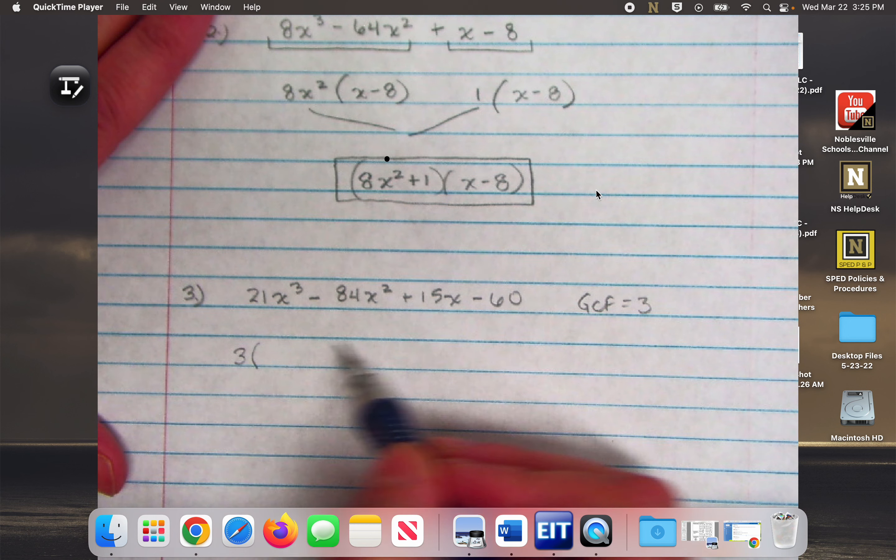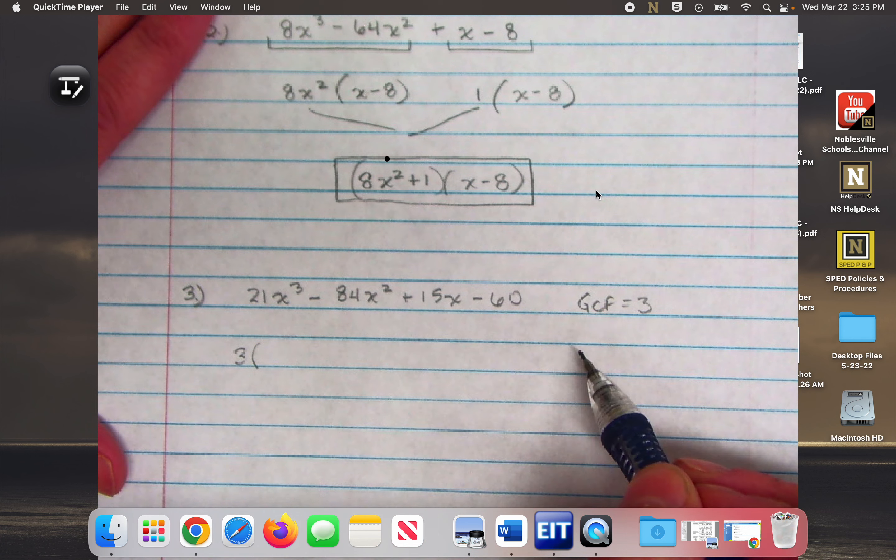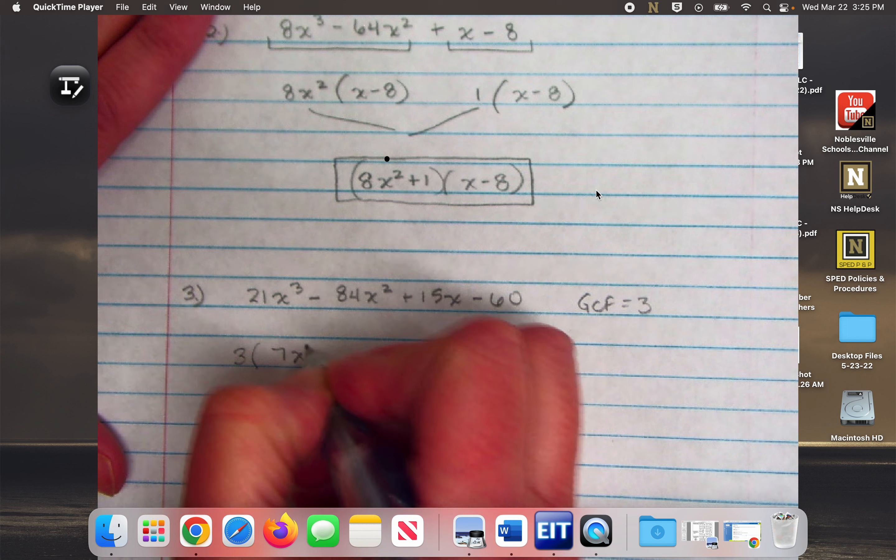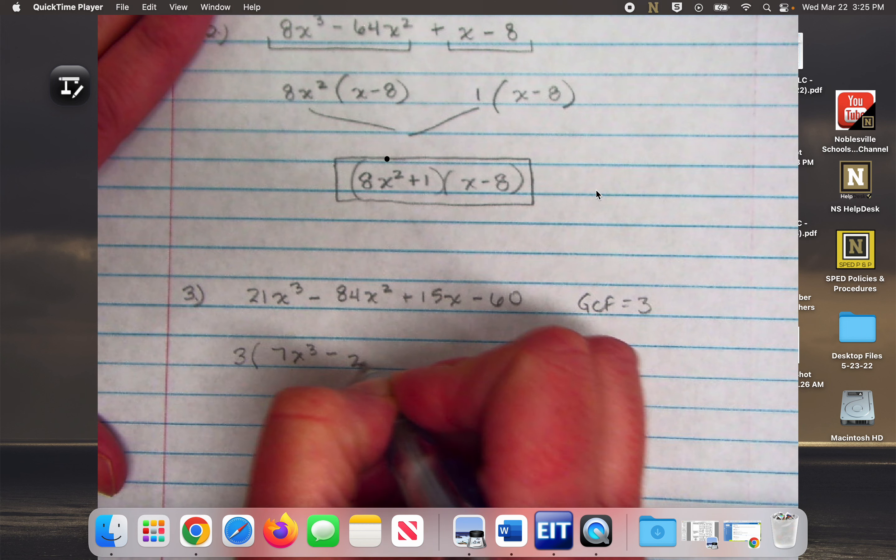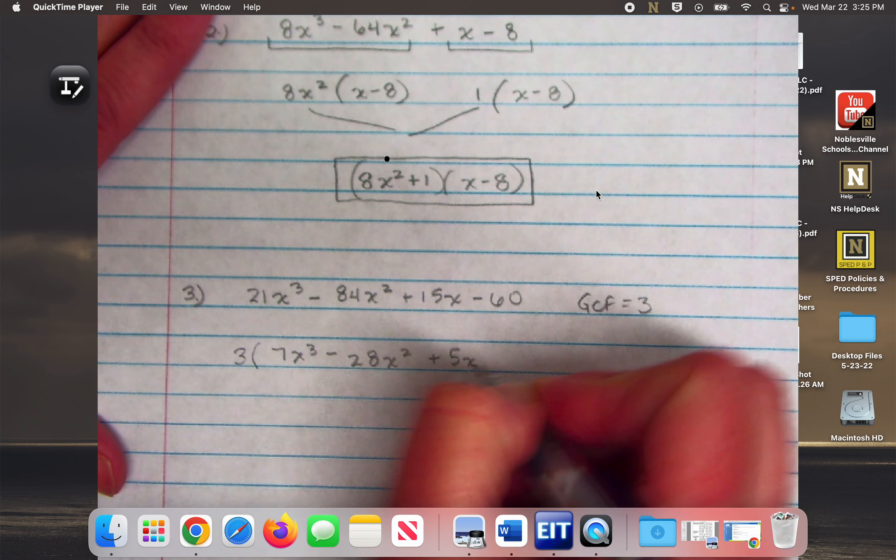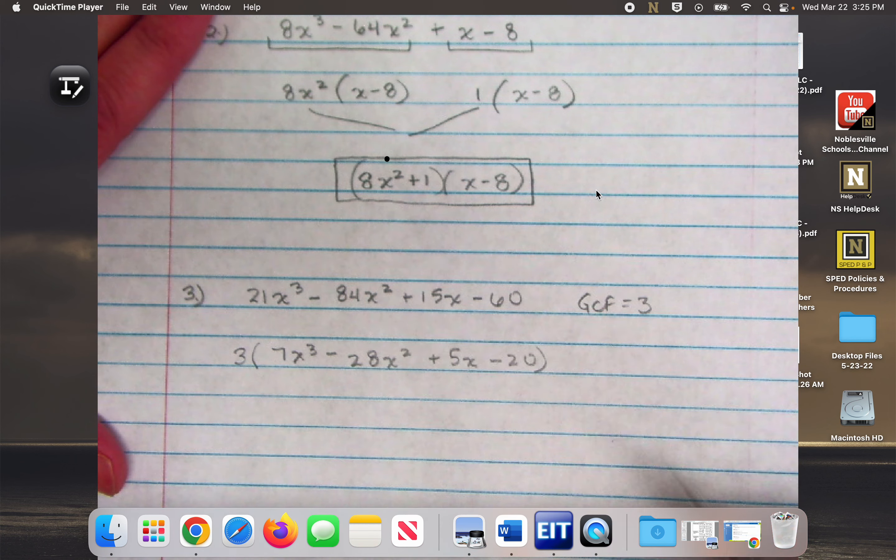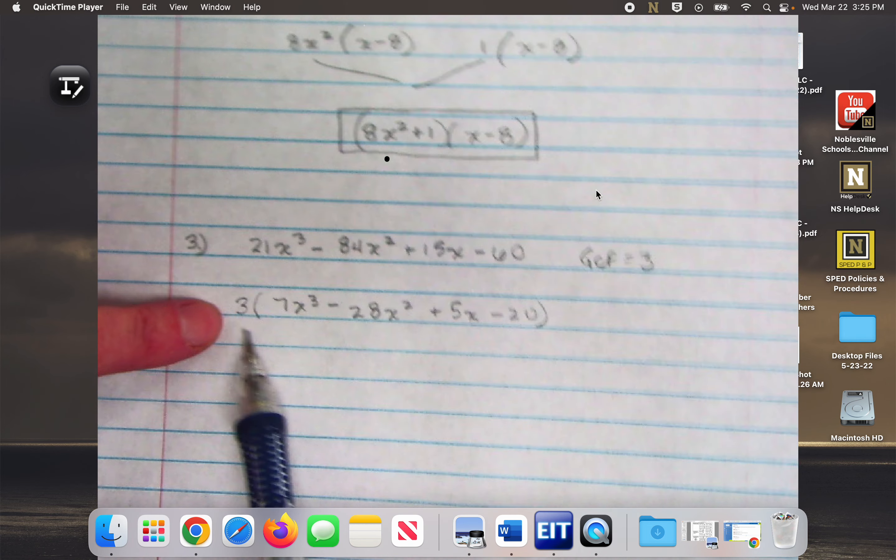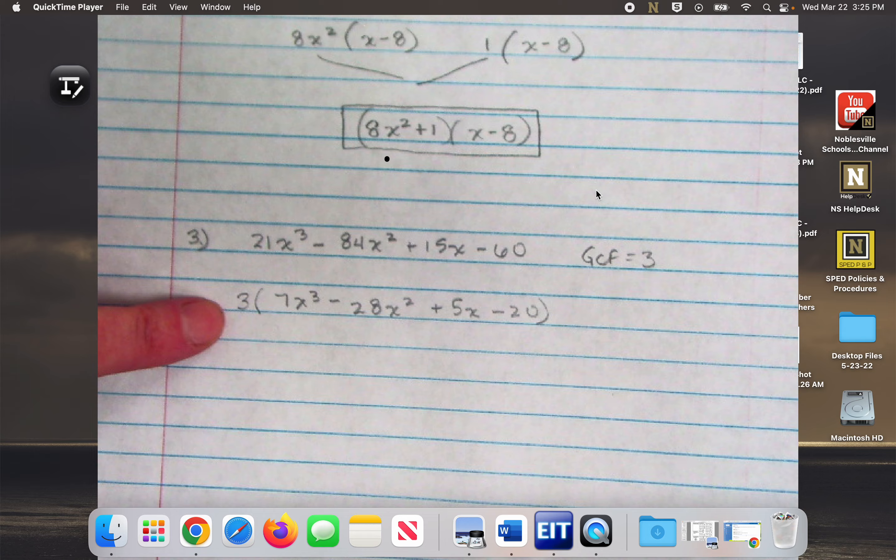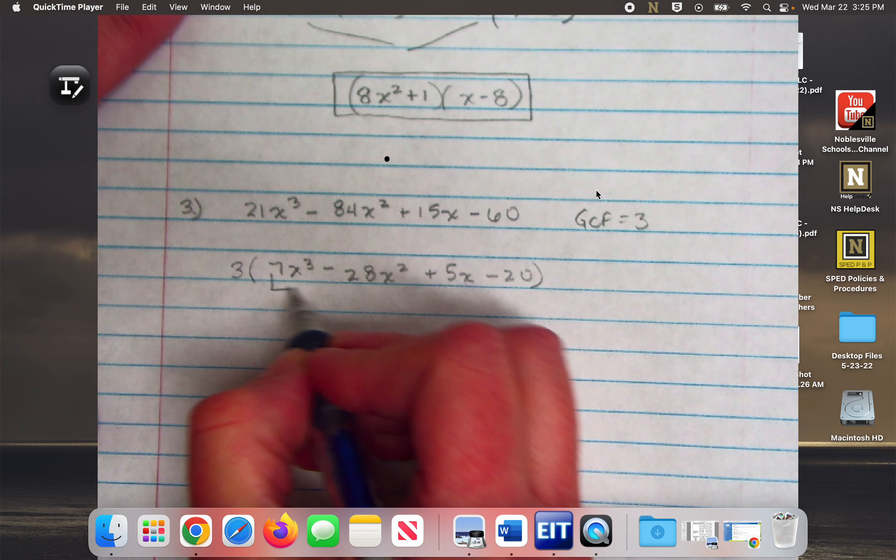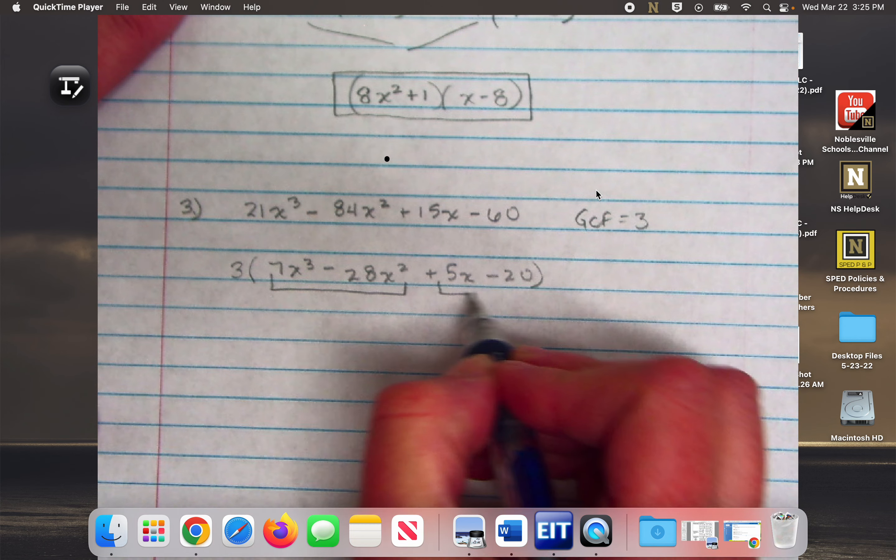So I'm going to take 3 out, and then I'm going to come up with four terms then I'm going to group those. So I'm going to have 7x to the third minus 28x squared plus 5x minus 20. So this 3 just like when we did greatest common factor yesterday will just become part of my answer. I can't forget about it. But then I'm just going to go ahead and ignore it for right now and make my groups.